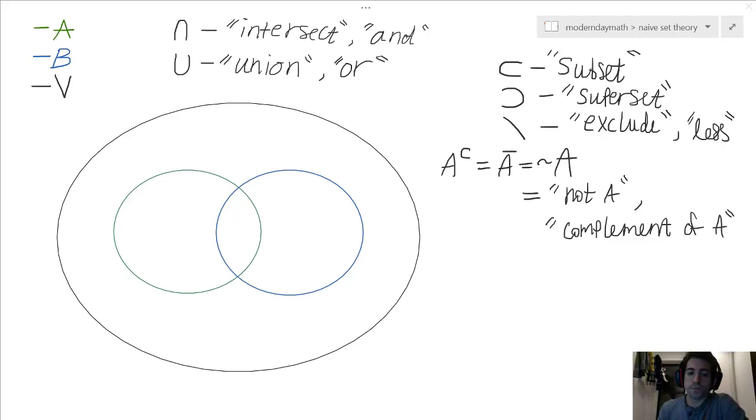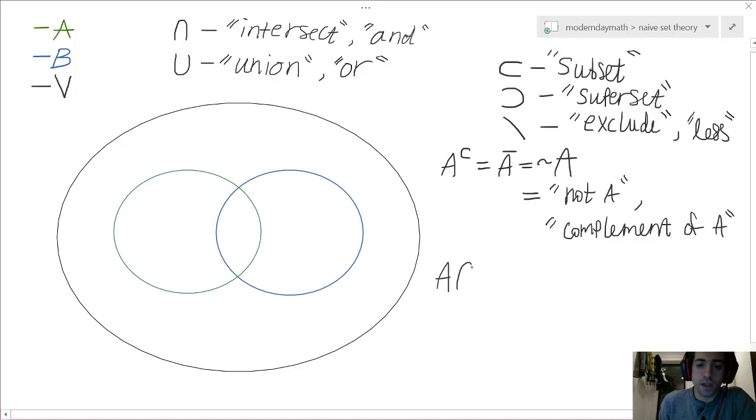So, when we talk about intersection, let's say we're dealing with A intersect B. We're going to be dealing with this region right here. So if we're dealing with A intersect B, that is going to be the section of elements that both A and B share.